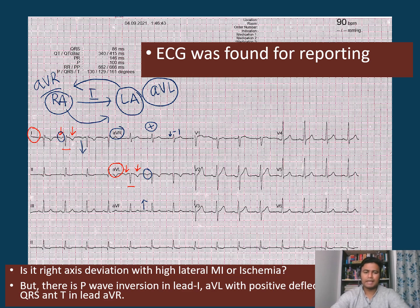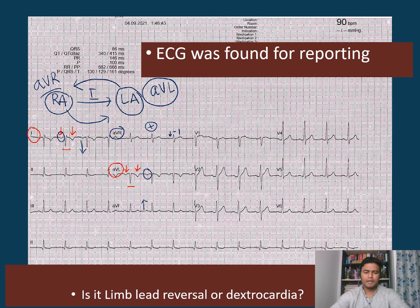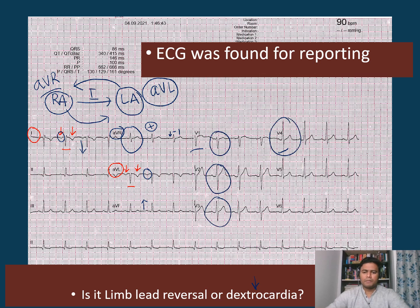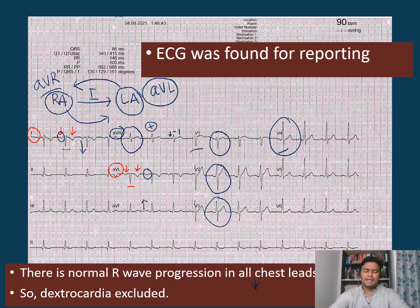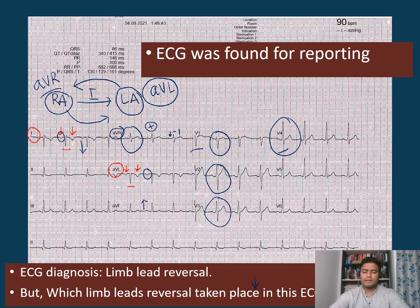Another differential diagnosis could be dextrocardia, because in dextrocardia you also have positivity in AVR. But if we look at the chest leads from V1 to V4, the R wave progression in all of those seems to be normal. Normal R wave progression excludes dextrocardia. So the diagnosis is limb lead reversal — specifically RA to LA lead reversal.